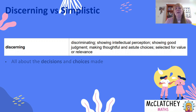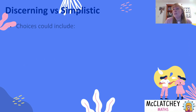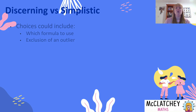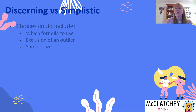You might be thinking you haven't made any decisions in your PSMT — that it was all decided for you — but that's not entirely true. Some of these choices could include which formula to use to solve the problem. In a statistics situation, you might have decided to exclude an outlier — that's a decision you've made. Was it the right or wrong decision? It depends on how the teacher defines discerning. The size of your sample, if you are choosing your own data, could also be a discerning or a simplistic choice.